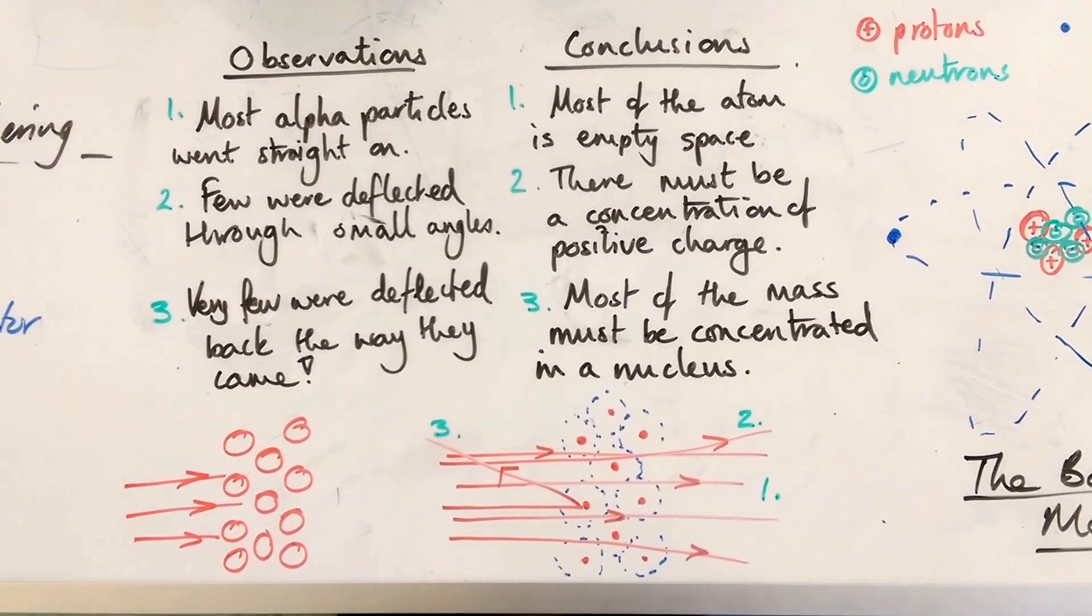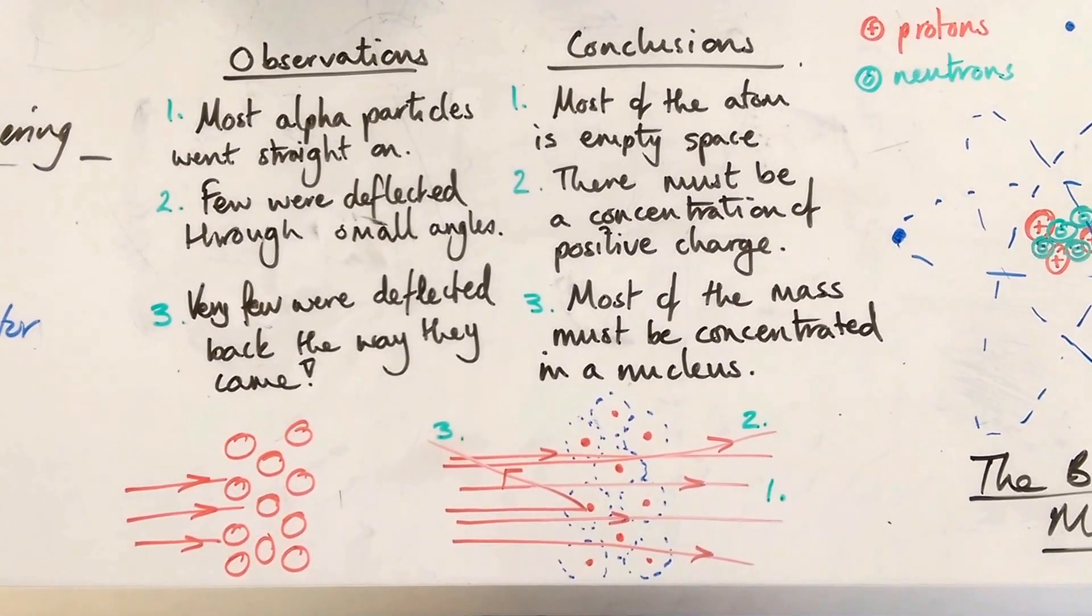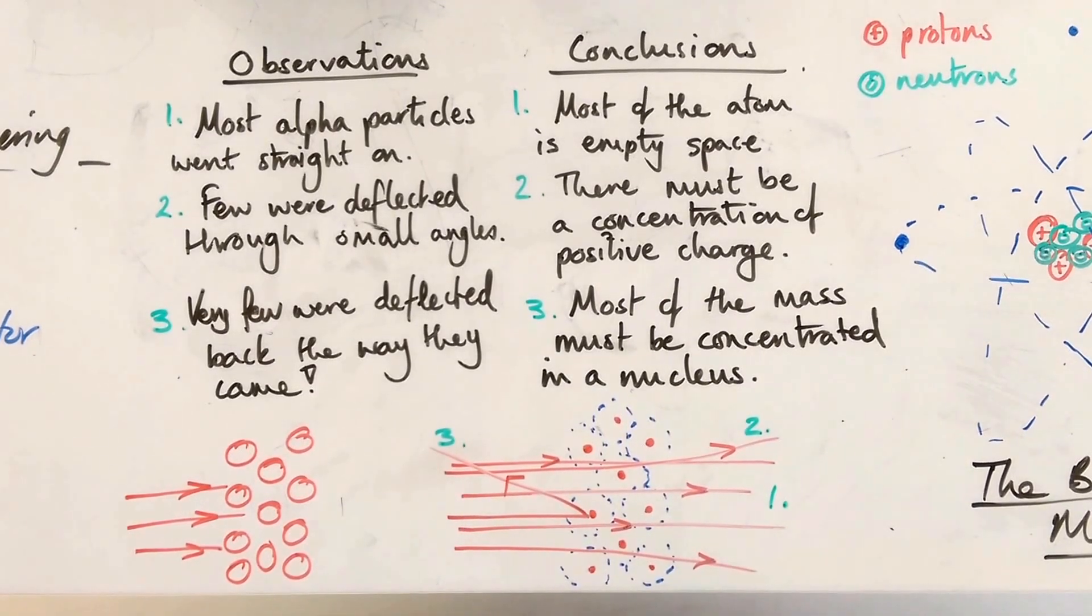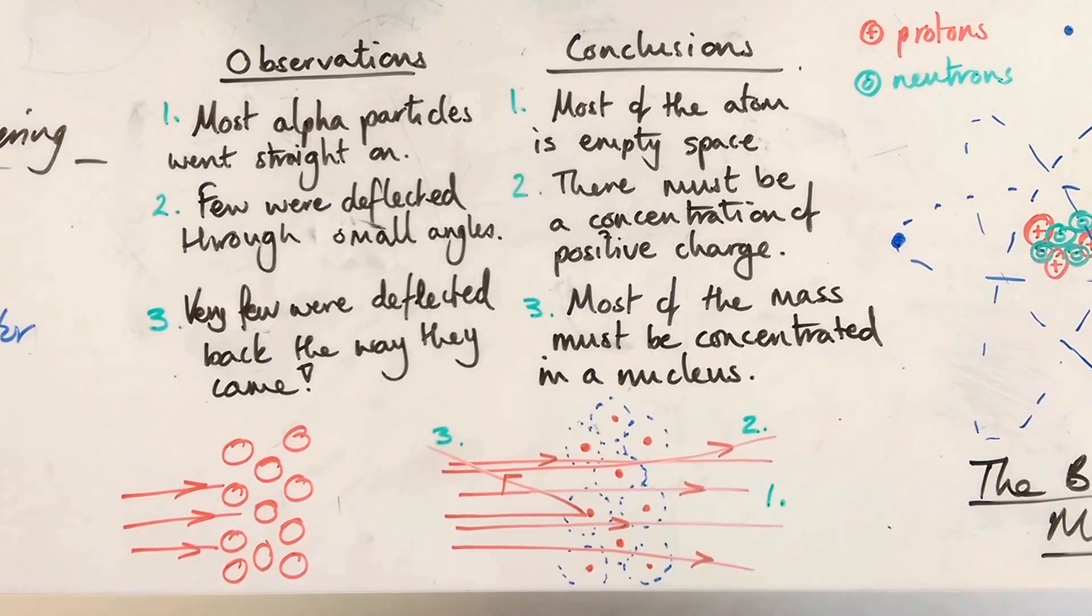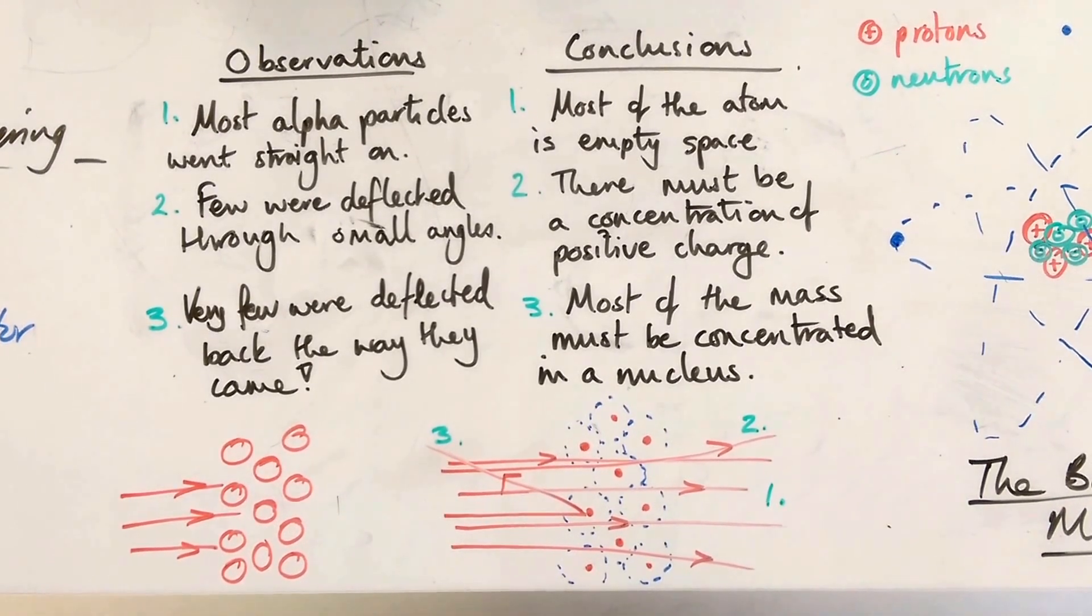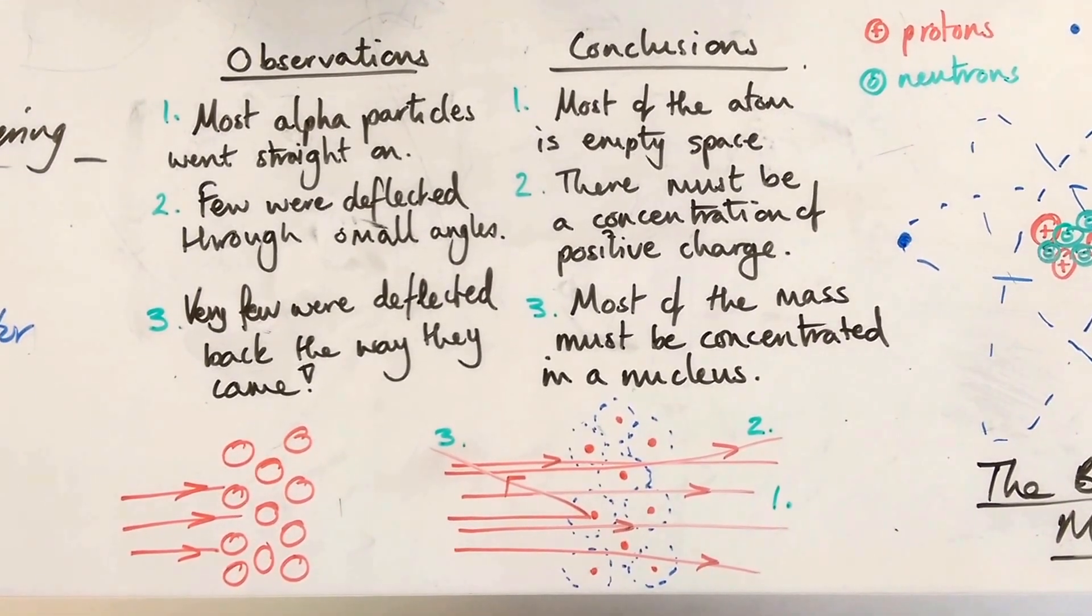And then three, very few were deflected back the way they came. And this was the really surprising one. And this meant that most of the mass had to be concentrated in a small, very dense nucleus at the centre, probably, of the atom.